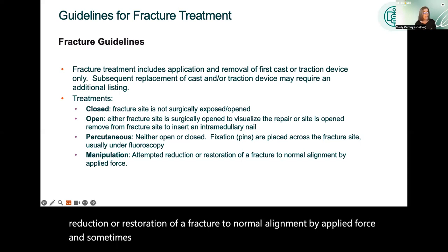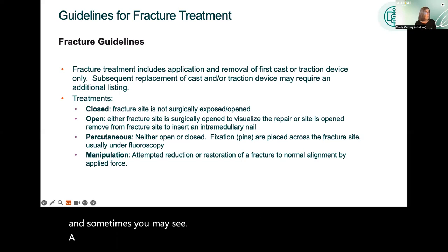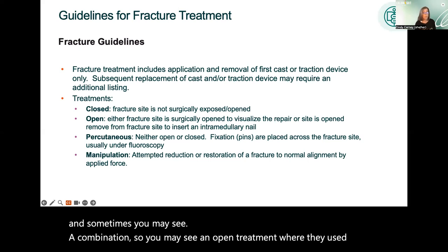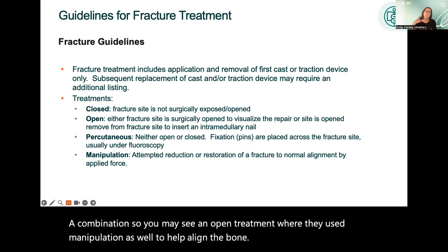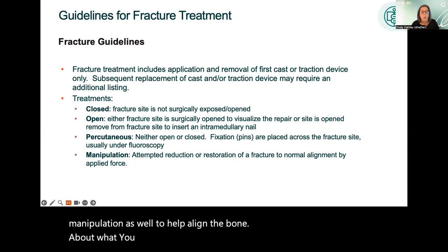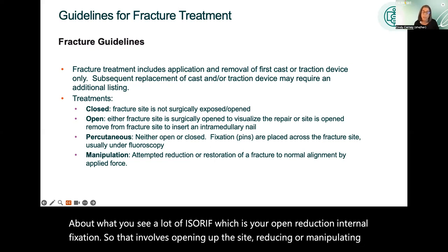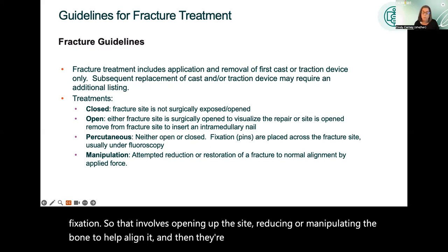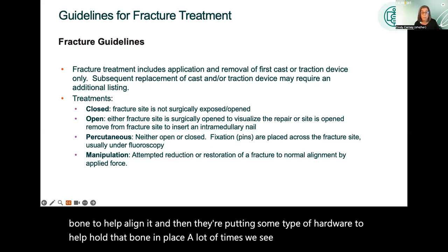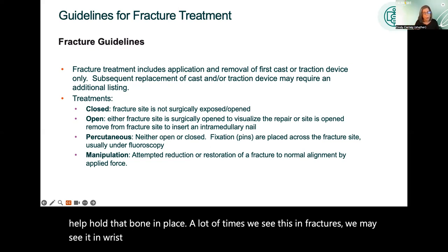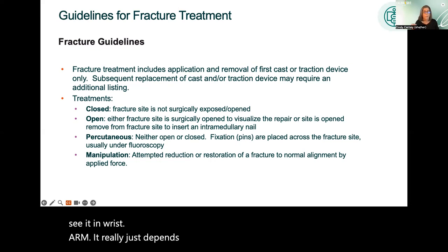Sometimes you may see a combination, such as an open treatment where manipulation was also used to help align the bone. What you see a lot of is ORIF — open reduction internal fixation — which involves opening the site, reducing or manipulating the bone to help align it, and then placing some type of hardware to hold the bone in place. This is common in fractures of the wrist and arms, depending on the fracture site.